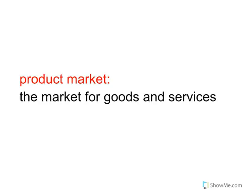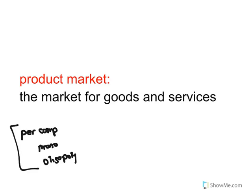A product market is a market for goods and services, and we've actually looked at product markets extensively over the course of this course — everything from perfect competition to monopoly to oligopoly. All of these market structures fall under product markets.